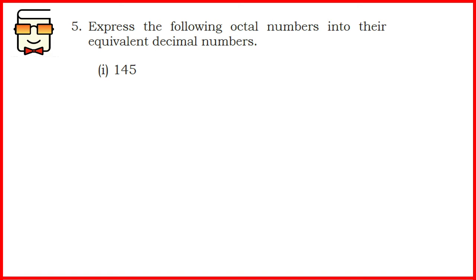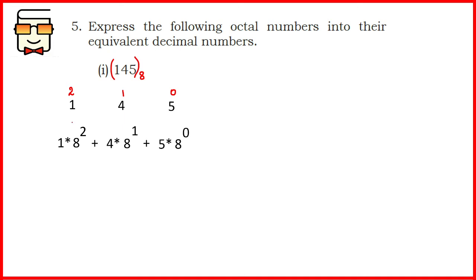Coming to question number 5: you will be given octal numbers and you have to convert them to decimal numbers. The first part is 145 in octal. Although the base is not specified, you have to read the question carefully and understand that the base here is 8. For converting octal to decimal, you multiply each digit in the number by a power of 8, and the power depends upon the position of the digit.